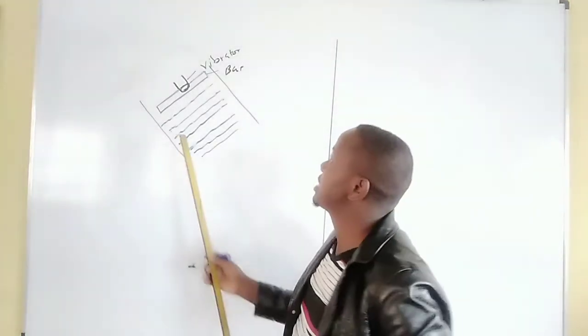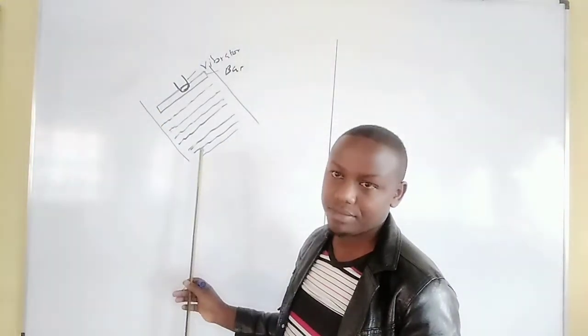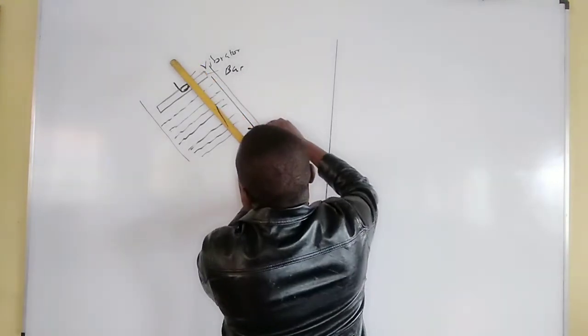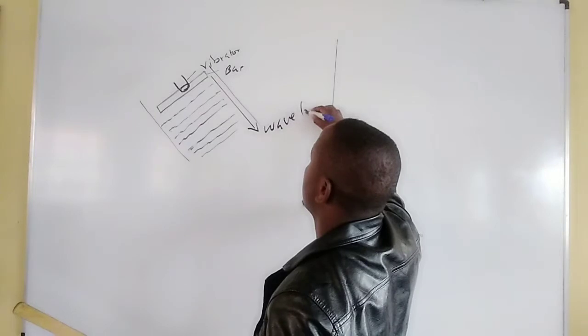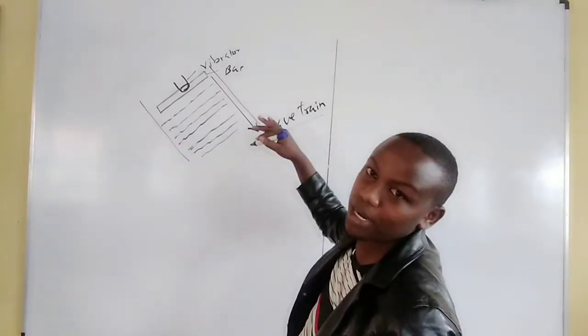So now this straight bar makes the waves to be plain and they progress now, they move. So you find the wave train, the wave train progresses as plain waves.